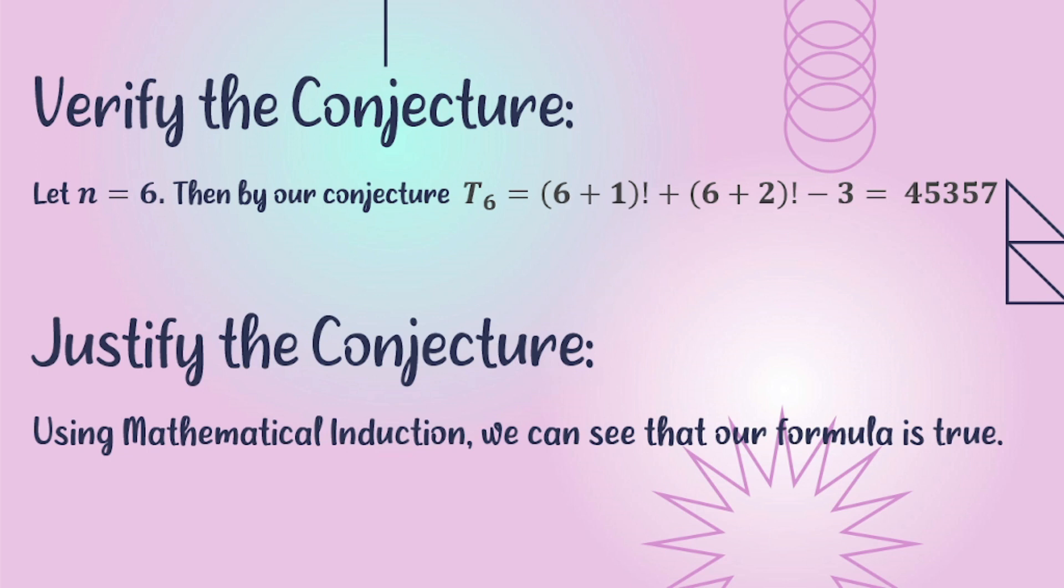Let n = 6. To get the value of t sub n when n equals 6, we substitute the value of n into our formula. After the substitution process,